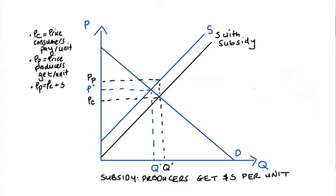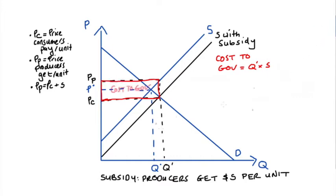Now we need to do our welfare analysis, and it's a good idea to start with the government. The government has injected money into this market — the total cost of the subsidy to the government is equal to the quantity traded q' times the subsidy amount s. Visually, that's the area of this rectangle, with height s and length q'.